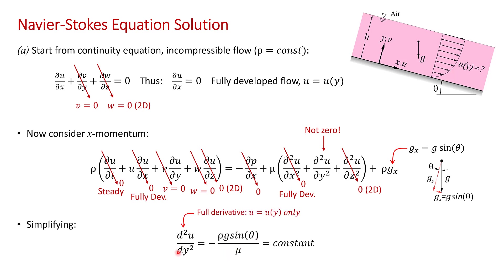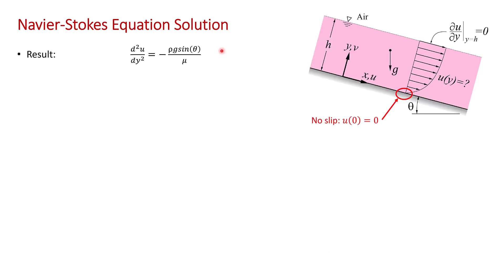We get that d²u/dy² = -ρg sin θ/μ. This is a constant, so that will make integration particularly easy. Notice that I've gotten rid of the partial derivative here. I've gone to a full derivative because now we've shown that u is only a function of y. It doesn't change in the x direction. So I've rewritten this expression on the next slide. Here it is: d²u/dy² = -ρg sin θ/μ. As I pointed out, the term on the right hand side of this equation is a constant, so it's particularly easy to integrate.